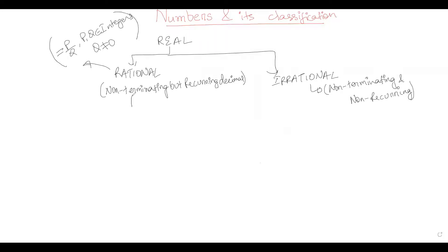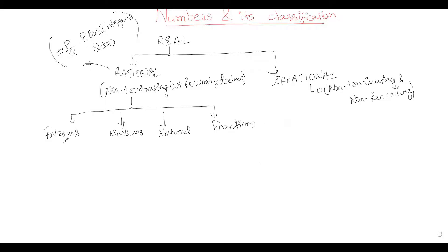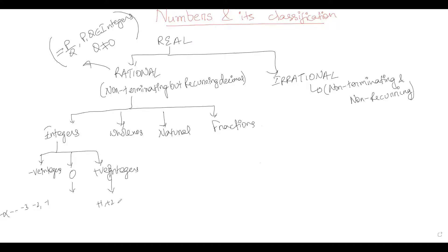Now let us classify rational numbers. Rational numbers are further classified into integers, whole numbers, natural numbers, and fractions. Integers include negative integers like minus one, minus two, minus three to minus infinity, zero which is neutral, and positive integers like one, two, three to infinity.